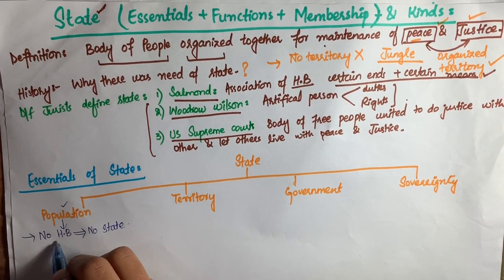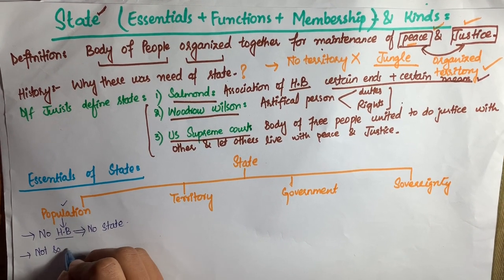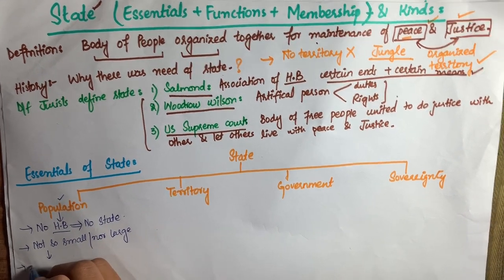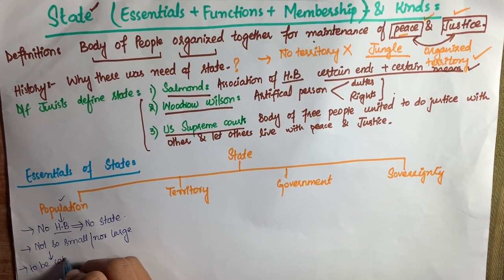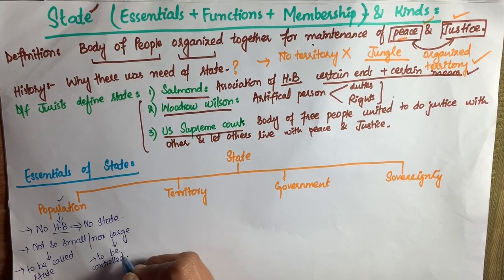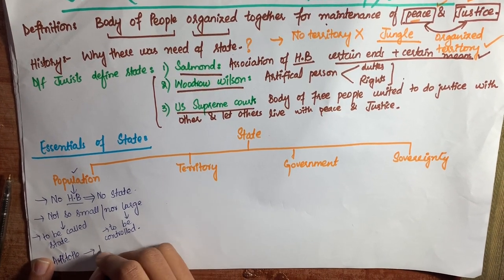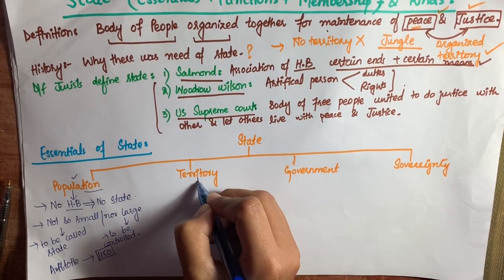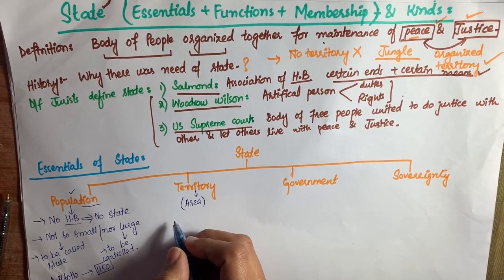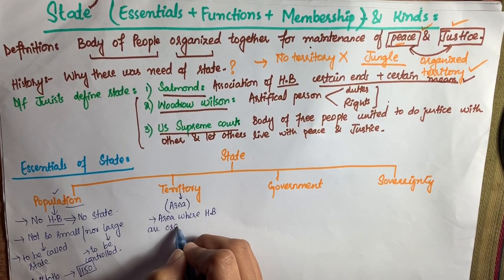First, population means the organization of people. Without the concept of human beings, there is no concept of state. The population should be neither too small nor too large — sufficient enough to be called a state and to be controlled in an organized form. Aristotle described the ideal number of human beings in a state as 1,050.